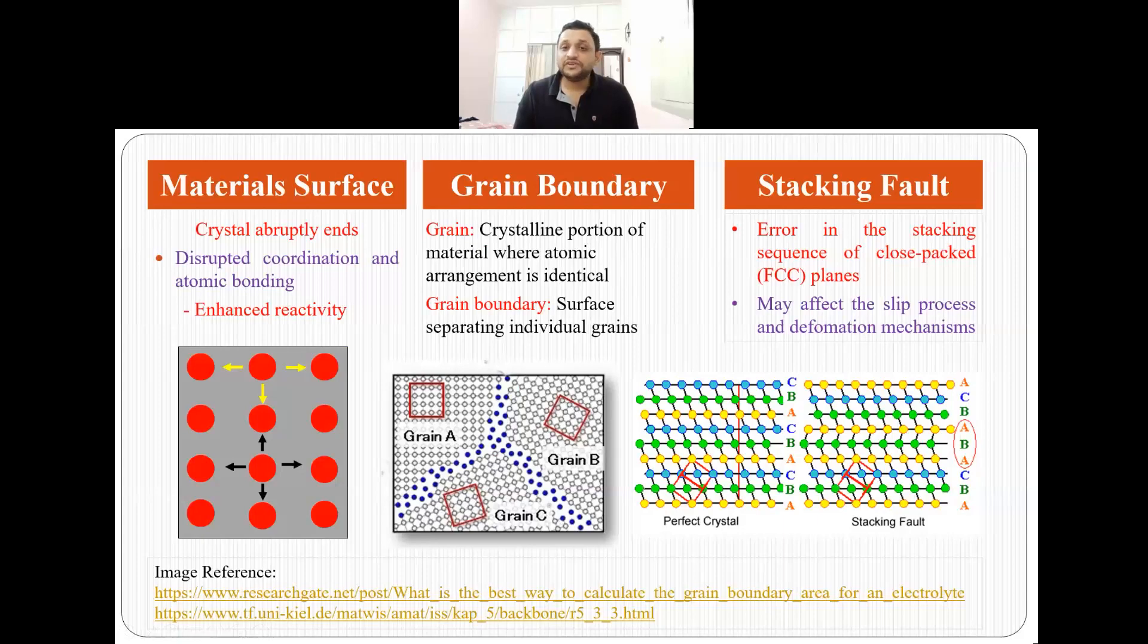So let's talk about the material surface. Why the material surface is called as a defect? Surface of material is called as a defect because crystal abruptly ends over here. Consider this example. Here this is your material and these are your atoms. Now if you see inside of the material, suppose we take this atom.